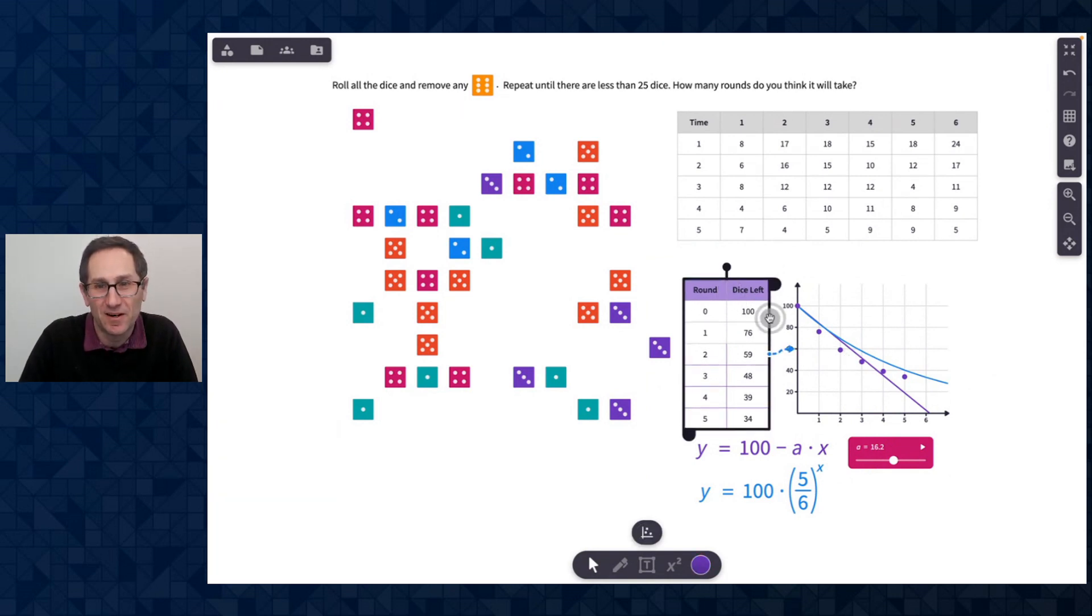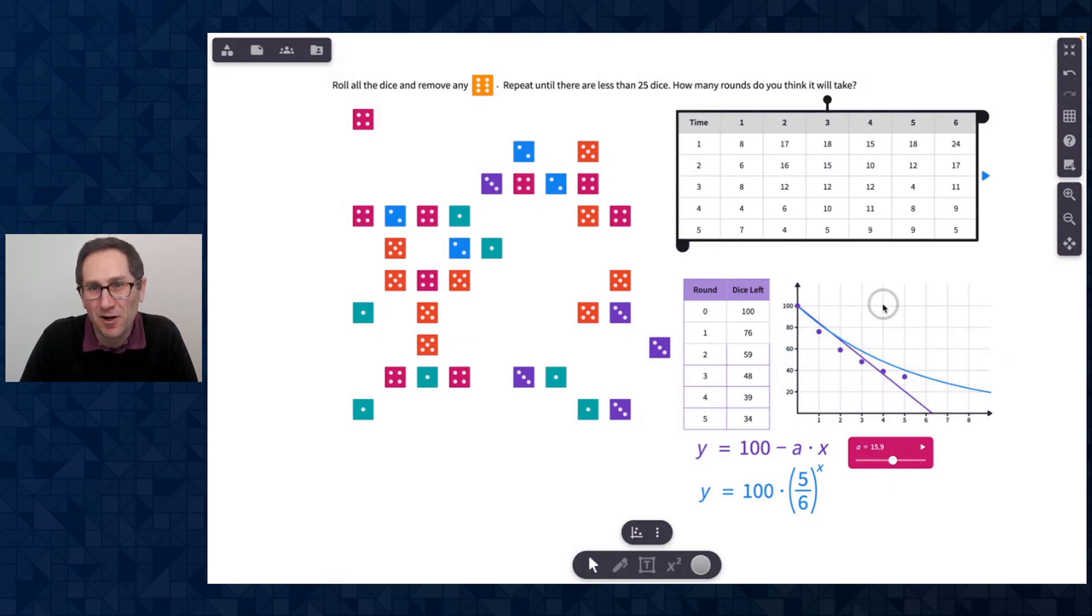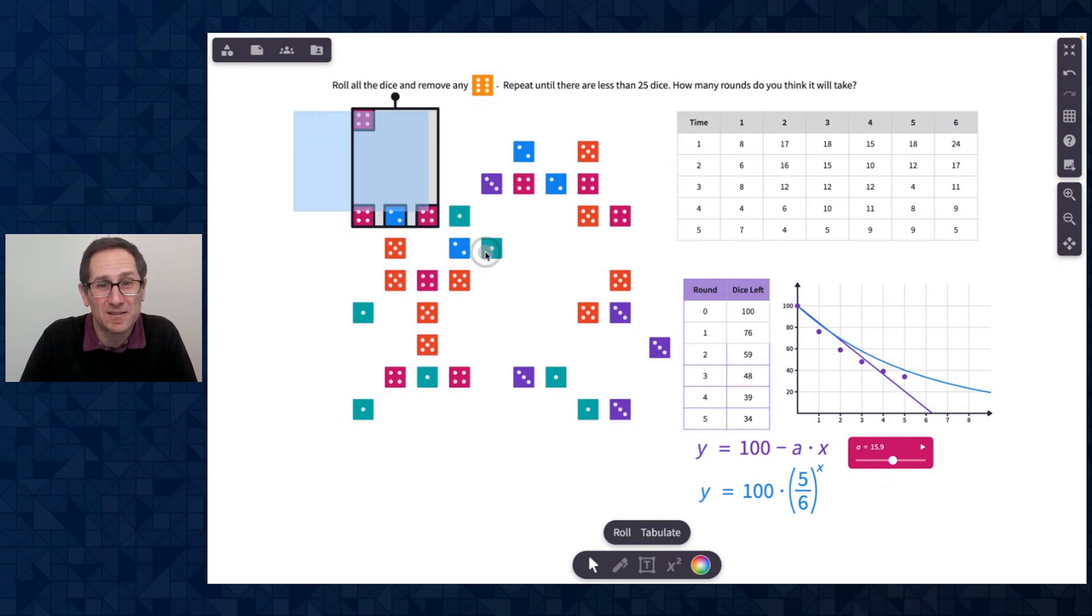But my question again was how long until there are 25. I'm still not there yet. And if I adjust my slider to something like this, I'm trying to, it doesn't feel good about those points, right? Maybe something like that. 25 might be around four and a half. Here I can extend the graph going this way a little bit too. 25 is going to be around like round seven. So let's see. I'm already at round six and we're not at 25 yet. So let's roll it again.